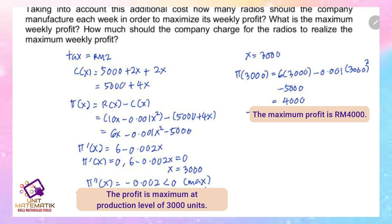Using the same value x = 3000 to find the price that should be charged, substitute into the price-demand function: P(3000) = 10 - 0.001 × 3000 = 7. The price that the company should charge for each radio is RM7.